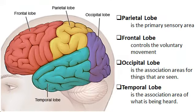The surface of the two hemispheres is divided into four lobes. The parietal lobe is the primary sensory area. The frontal lobe controls voluntary movement. The occipital lobe is the association area for things that are seen, and the temporal lobe is the association area for what is being heard. Thought, learning, and personality are also controlled by the occipital and temporal lobes.